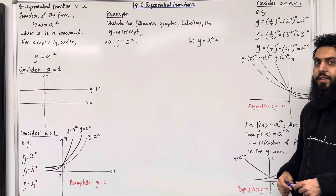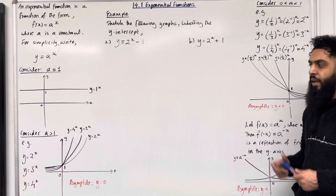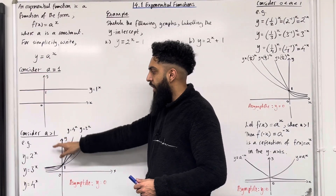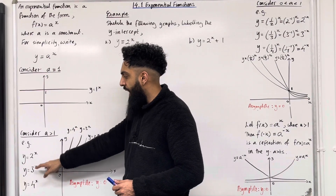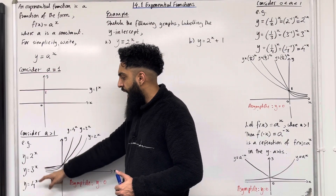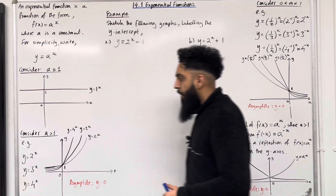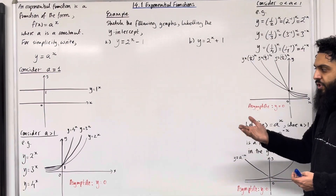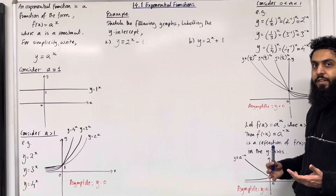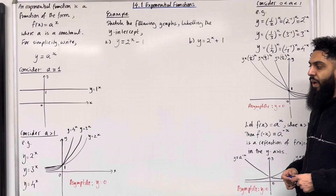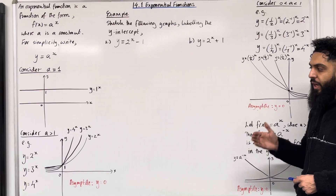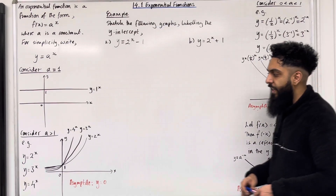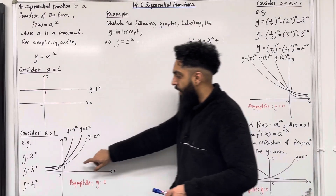Scenario 2: consider a > 1. For example, a = 2, a = 3, a = 4. I'm going to go through the graphs of each of these equations. If I substitute x = 0 in each of these equations, I get y = 1. Hence the y-intercept is 1.